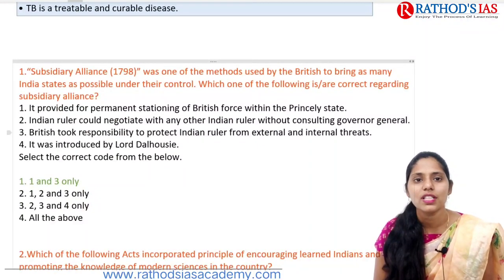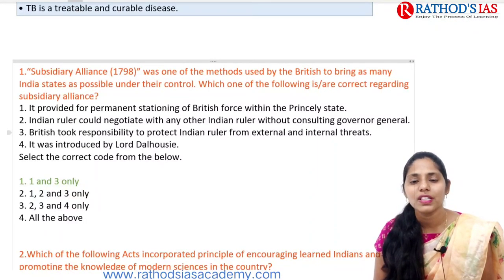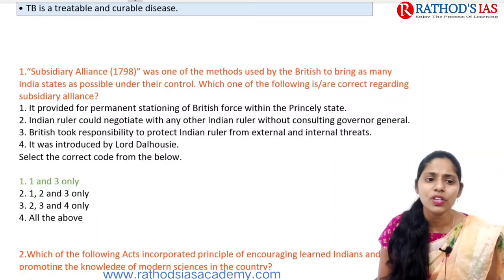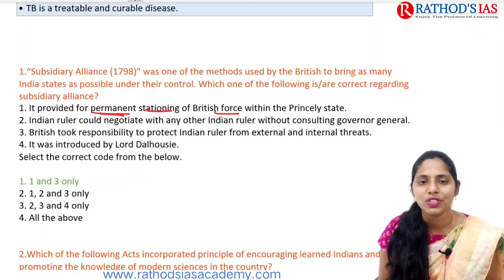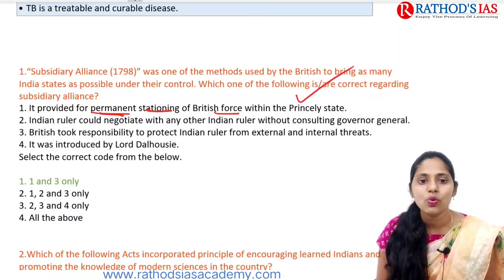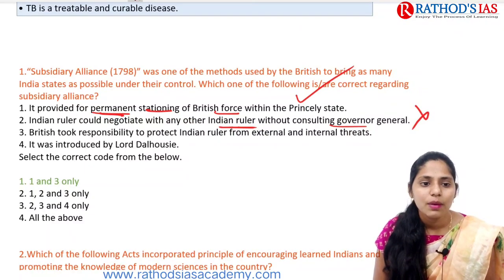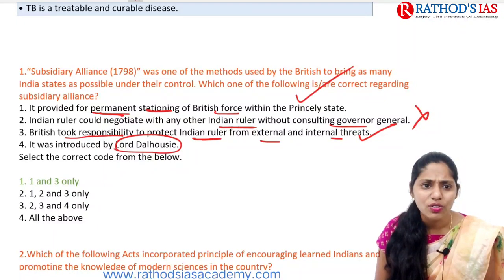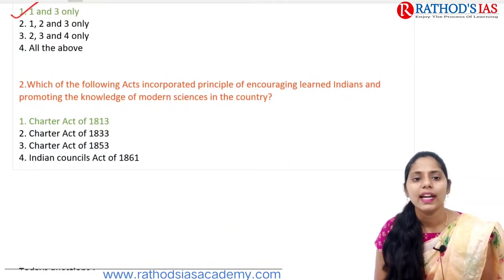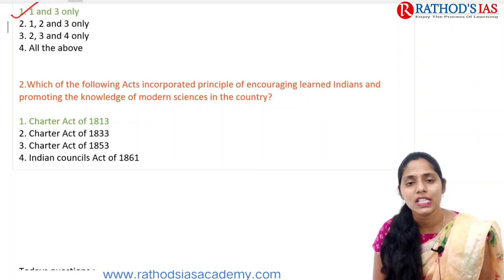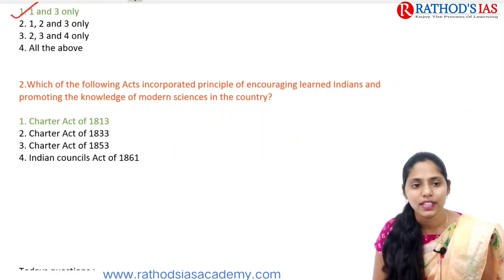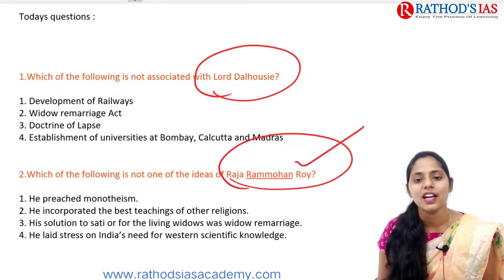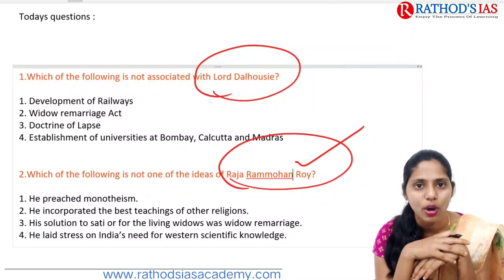Regarding yesterday's questions: the first was about Subsidiary Alliance, a method used by the British to bring Indian states under their control. Correct statements are: it provided for permanent stationing of British forces within princely states, and British took responsibility to protect Indian rulers from external and internal threats. An Indian ruler could not negotiate with any other Indian ruler without consulting the British. It was introduced by Lord Wellesley, not Dalhousie. The second question: the Charter Act of 1813 incorporated the principle of encouraging learned Indians and promoting the knowledge of modern sciences.